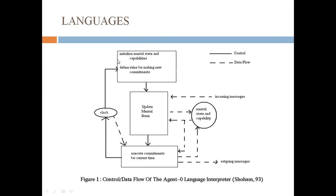Now the languages. You have a control and data flow. These are the controls, these are the data flow. This is initialization: initialize mental state and capabilities, define rules for making new commitments, then updating the mental state and executing commitments for current time. This is the mental state and capability, the incoming messages, the outgoing messages. A lot of things are happening as related to the mental state, updating the mental state and execution, and then the outgoing messages. So it becomes more intelligent, rational, and autonomous.